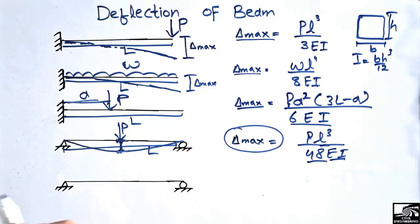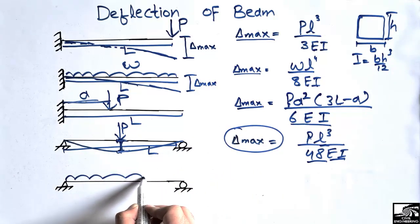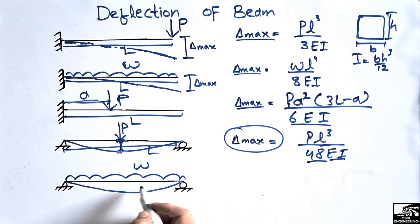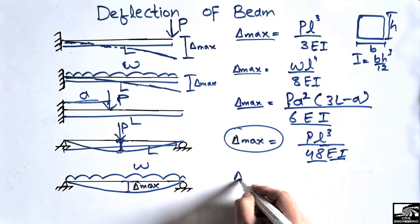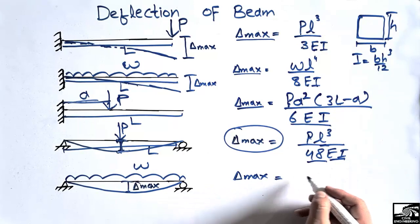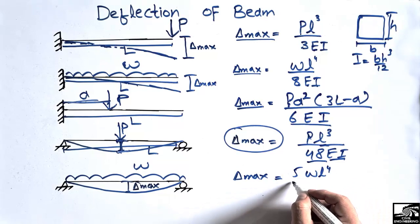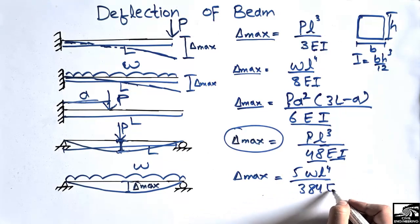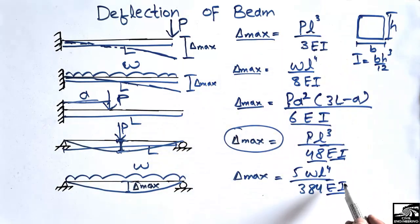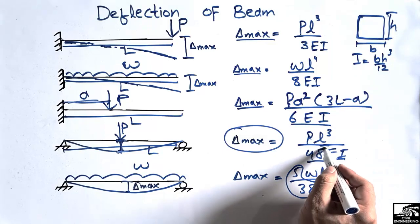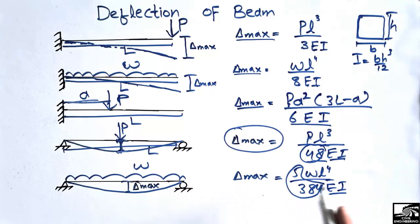When the same simply supported beam is loaded by a uniformly distributed load of magnitude w, it will also show maximum deflection at the mid-span of the beam. The formula for this case is: δ_max = 5wL⁴ / 384EI. The EI term is constant across all these formulas, but the numerical factors change with each loading case — these factors are the most important things to remember.